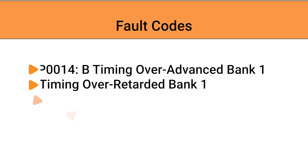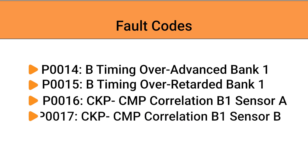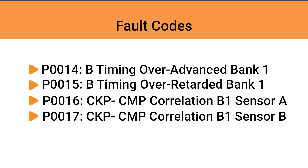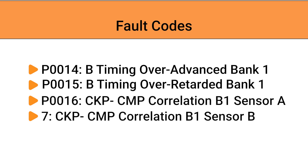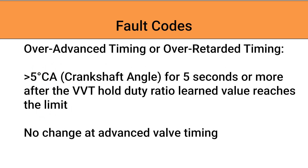Both systems will set fault codes we are accustomed to seeing, like P0016 and P0017. A fault for over-advanced or over-retarded timing will set when the ECM detects a difference between the target and actual cam timing. Most times this will be when a large adjustment is made but the actual movement is small.